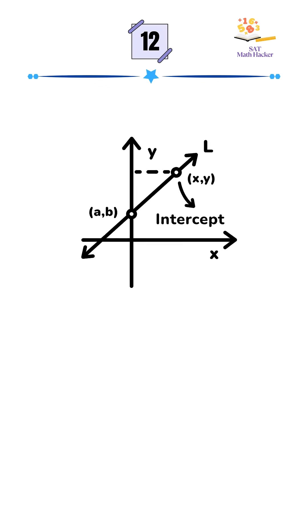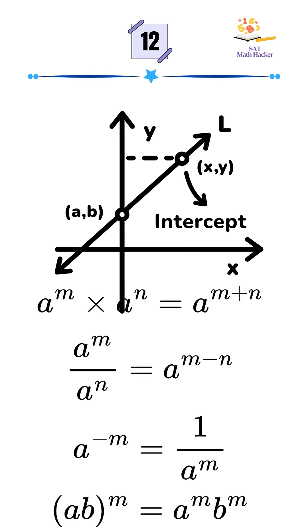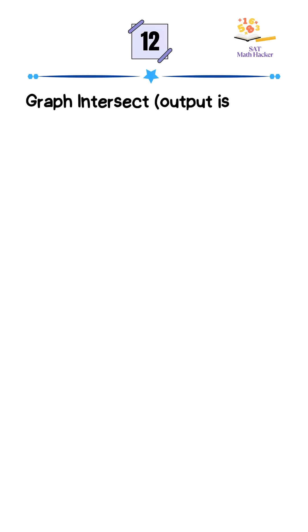This question tests your understanding of graphs and exponents. Graphs intersect when their outputs are equal, so we set f of x equal to g of x. That gives us the cube root of 27 to the power 2x equals 243 to the power 3 over 5x.